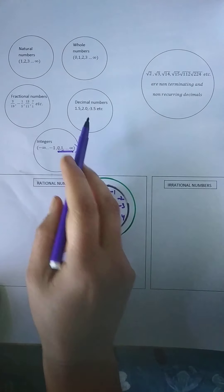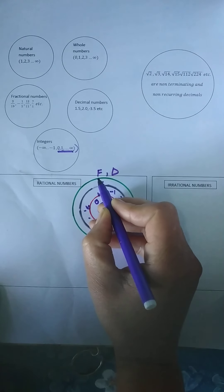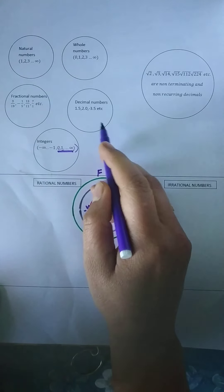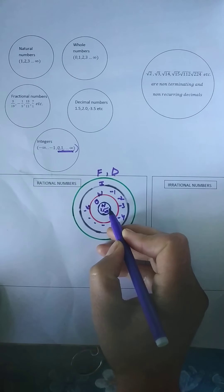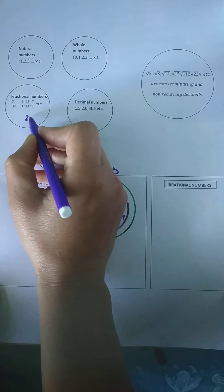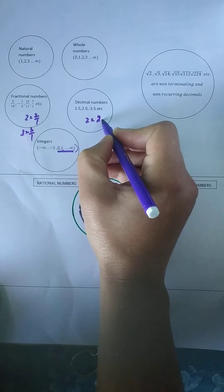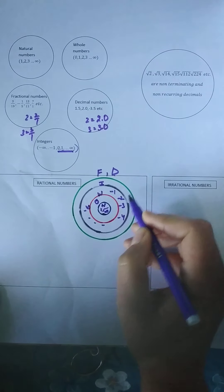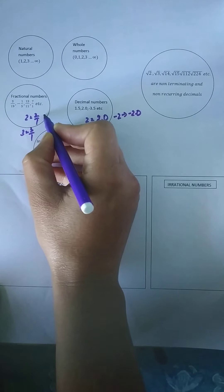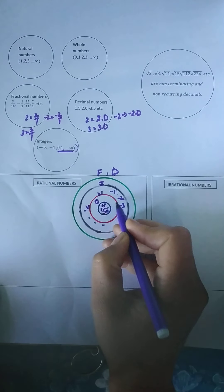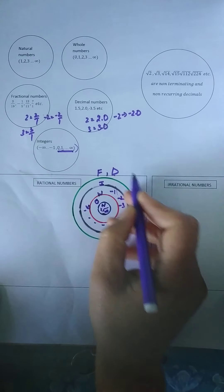Then there come fractional numbers and decimal numbers. I would say they are a sort of equivalent sets — fractions and decimals — because every fraction can be converted into a decimal and those decimals can be converted back into fractions. Fractions and decimals also include whole numbers, because 2 can be written as 2 over 1 — an improper fraction — and 3 as 3 over 1. Similarly, integers: minus 2 can be written as minus 2 over 1. So all whole numbers, integers, and natural numbers are fractions and decimals too. Fractions and decimals make a bigger set.